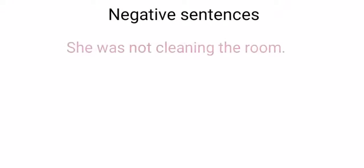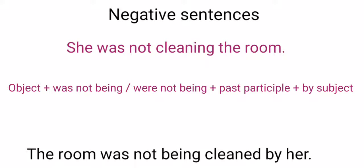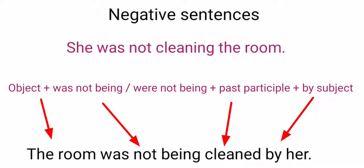'She was not cleaning the room' — this sentence is active voice. Now let's convert this sentence into passive voice. Here's the formula: object plus 'was not being' or 'were not being' plus past participle plus 'by' subject. Here's the passive voice: 'The room was not being cleaned by her.'